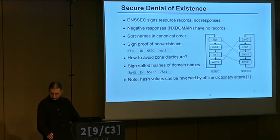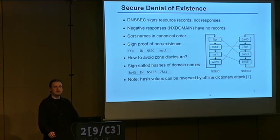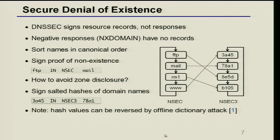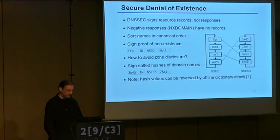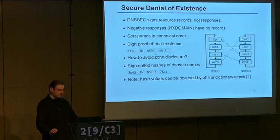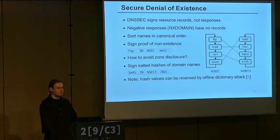DNSSEC signs only resource records, not responses. So negative responses — when you query a non-existing name — have no resource records, only an error code. The solution in DNSSEC is to sort all the names of a zone in canonical order and sign a proof of non-existence, the NSEC record. It says: there is a name FTP and a name mail in this zone, but in between there are no names. So when you query for something like Hulaboo and get an NXDOMAIN with a signature, you can verify that the name does not exist. The problem is this discloses all your zone data — anybody can retrieve all NSEC records and get a copy of your zone.